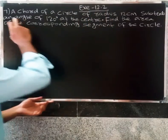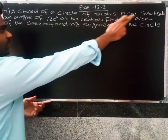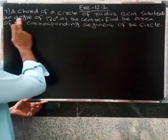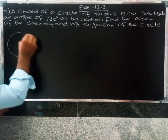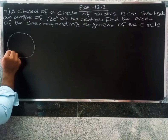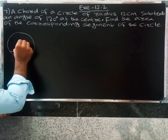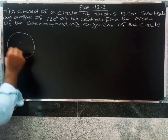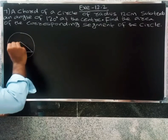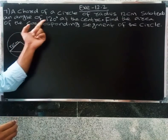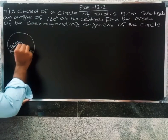This problem involves a circle of radius 12 centimeters with a central angle of 120 degrees at the center. We are given the radius as 12 centimeters and the sub-central angle of 120 degrees at the center.